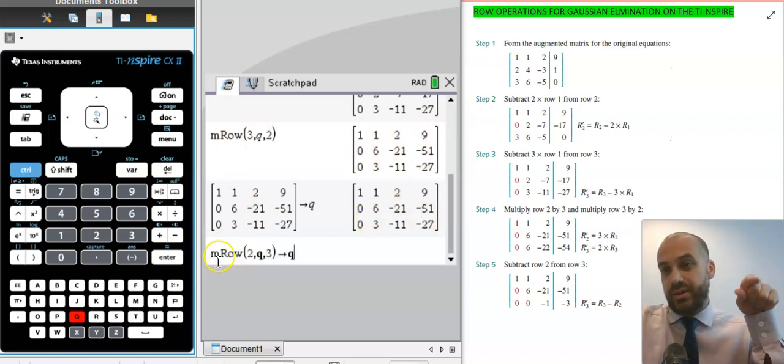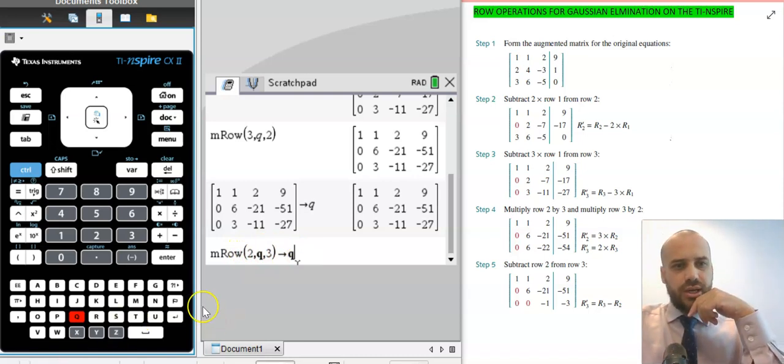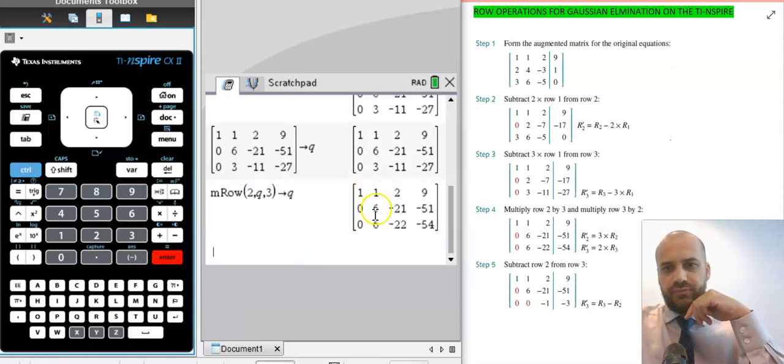So now I'm doing that other multiply row. Multiply row 3 by 2 in matrix Q, and then storing it as Q. And so we're very close. We should look exactly like that.